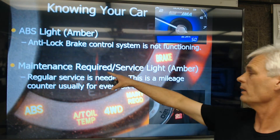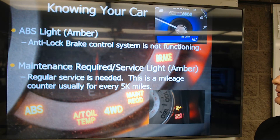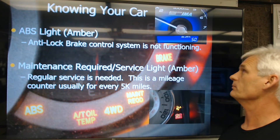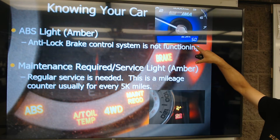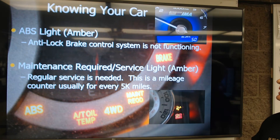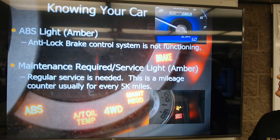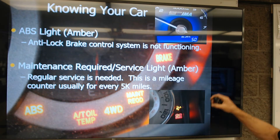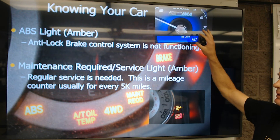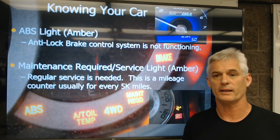Next is the maintenance required light or maintenance service light. It's an amber light just telling you that regular service is needed. It's just a mileage counter and usually goes off on most cars every 5,000 miles. Here's a Honda with a little screen that says oil life percentage — that's based on an algorithm in the computer that looks at number of cold starts, distance driven between starts, etc. In my humble but correct opinion, I recommend changing the oil and filter every 3,000 miles or three months, whichever comes first, if you want the engine to last.